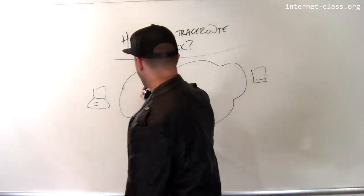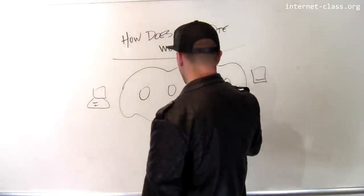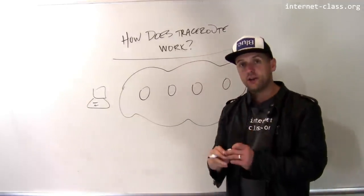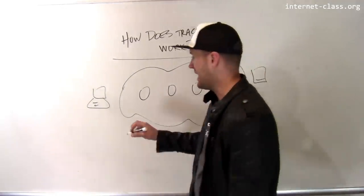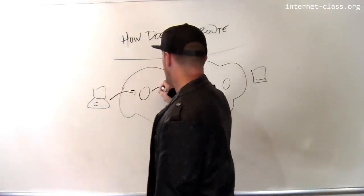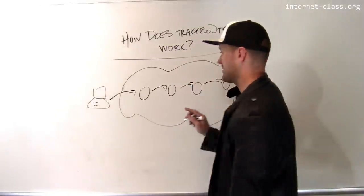So here's how this works. Within the internet, packets that are transmitted from your computer to this server are going to be touched and transmitted and retransmitted by a variety of different routers along the routing path. So a packet that I send to this server might go to this router and be transmitted to this router, to this router, and to this router before finally reaching the server.